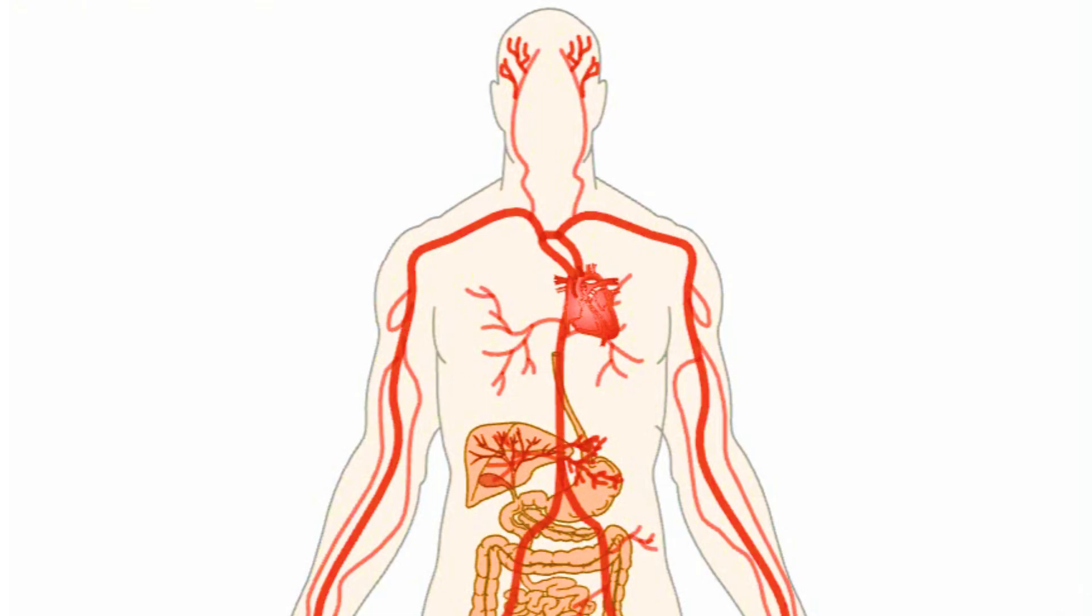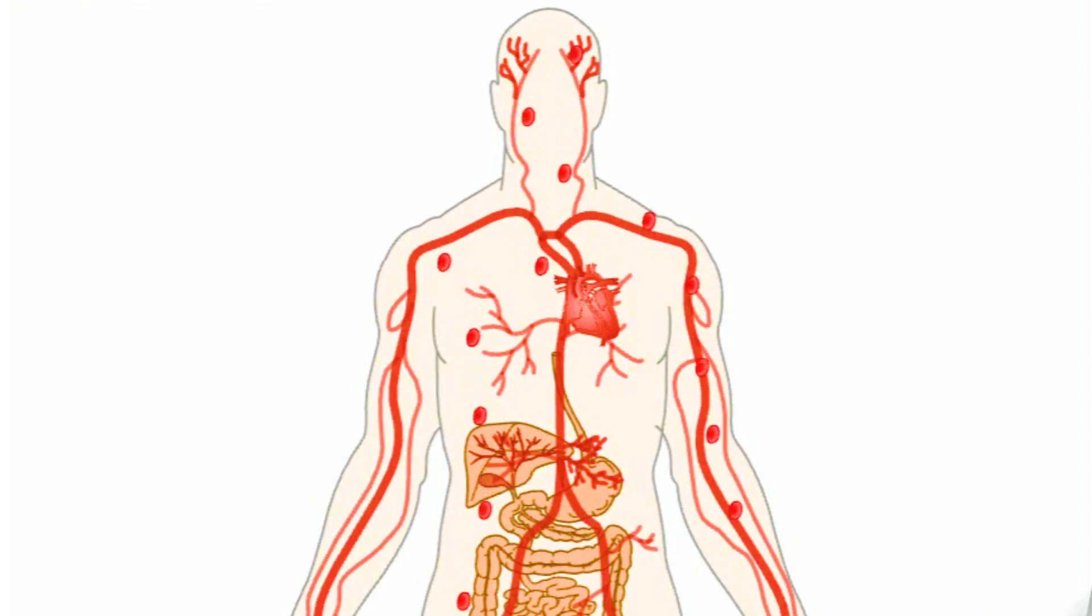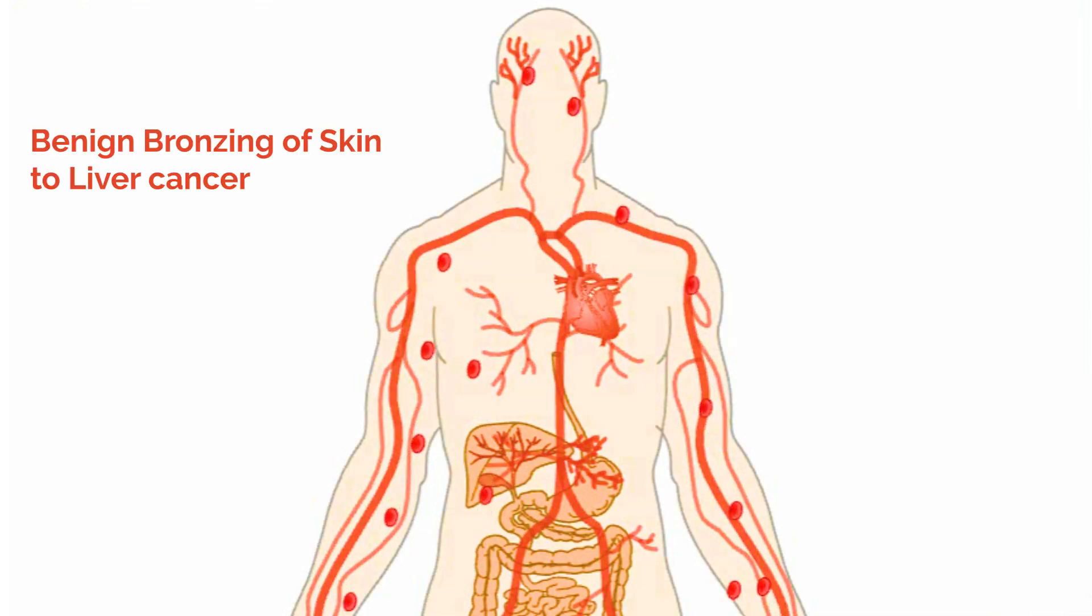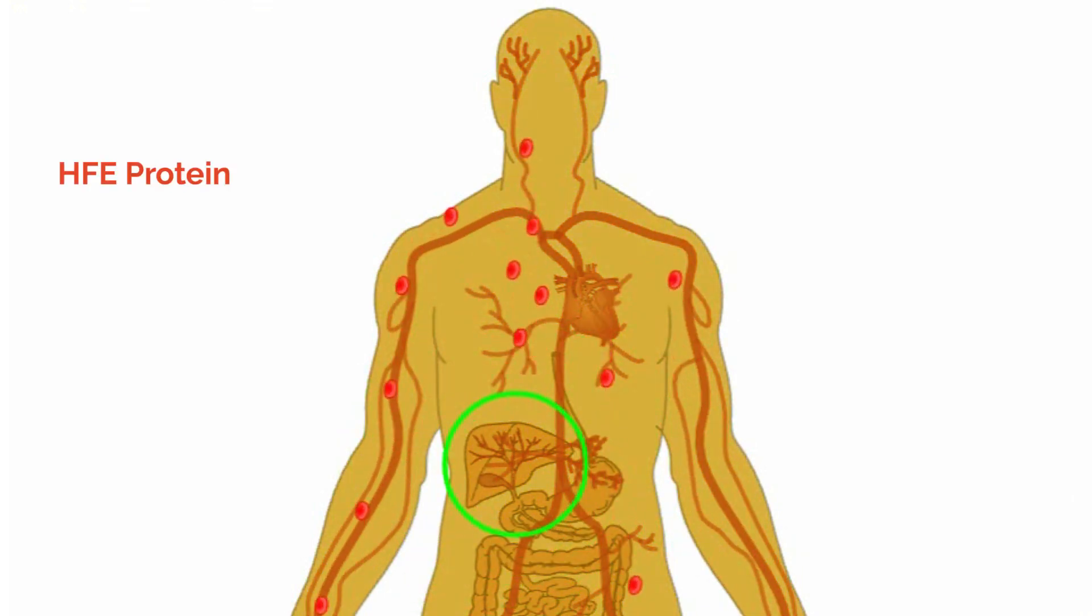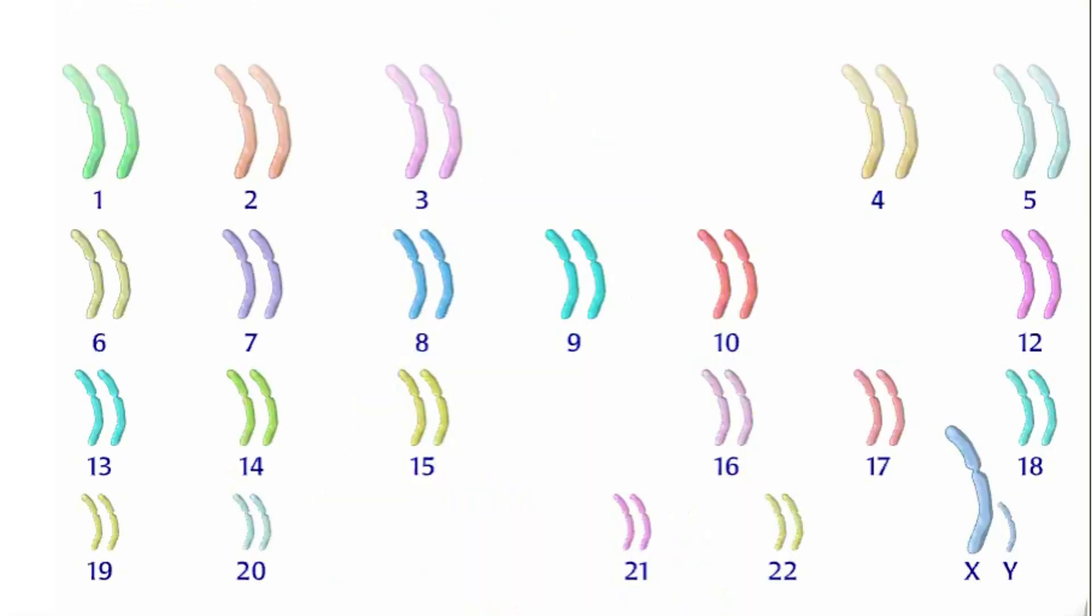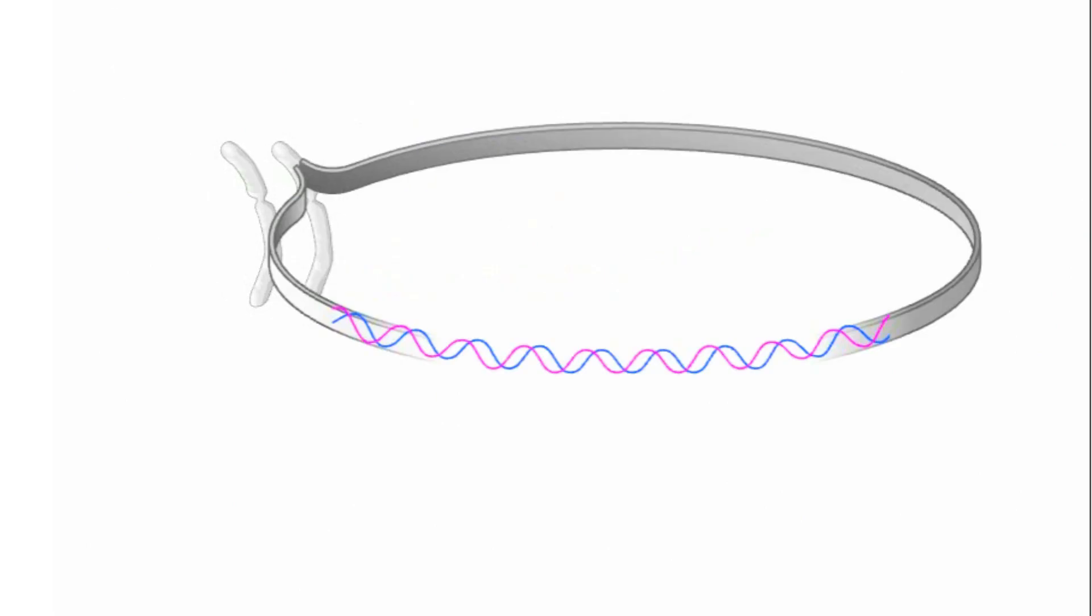Hereditary hemochromatosis is a genetic disorder that causes the body to absorb too much iron from the diet. All the problems associated with iron overload, from the benign bronzing of the skin to life-threatening liver cancer, can be traced back to one crucial protein called HFE. The HFE gene on chromosome 6 encodes the HFE protein.